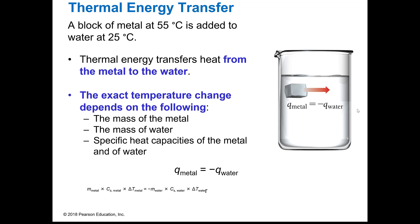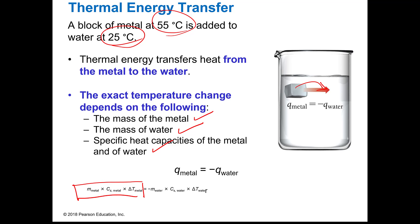Where we apply this is if you have a block of metal at 55 degrees C and you put that in some water at 25 degrees C, the temperature change is going to depend on the mass of the metal, the mass of the water, and the specific heat capacities of each thing. This looks just like what we just did — the heat of the metal. But this time, since we know they're going to reach equilibrium, we can set that equal to the negative Q of the water.